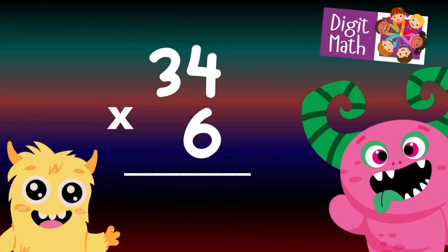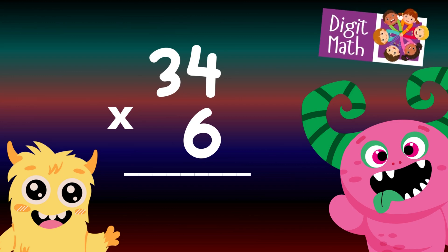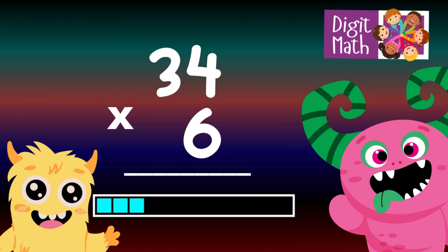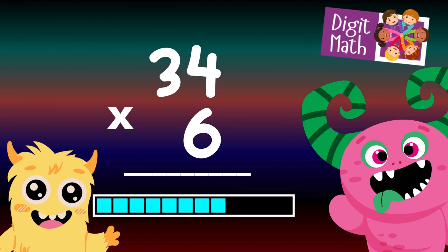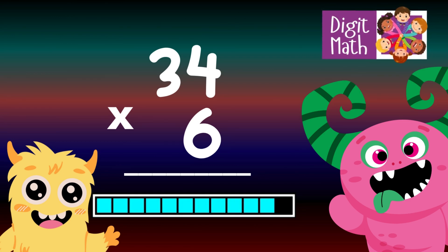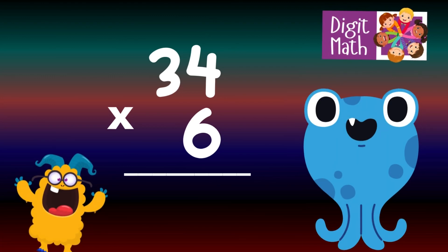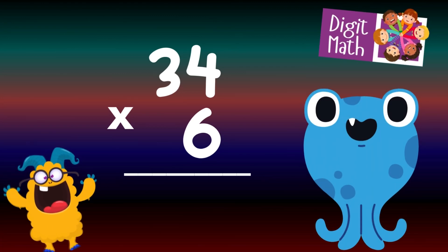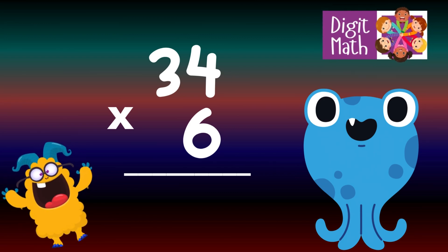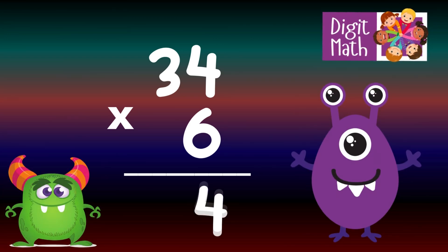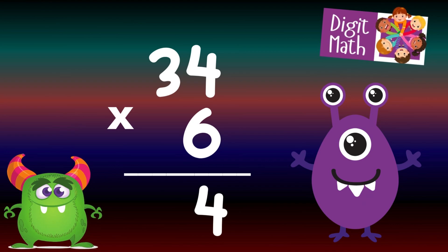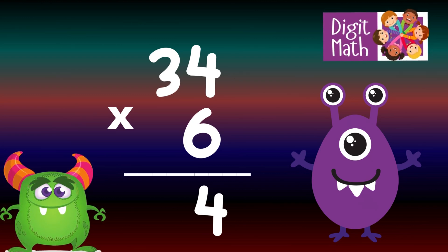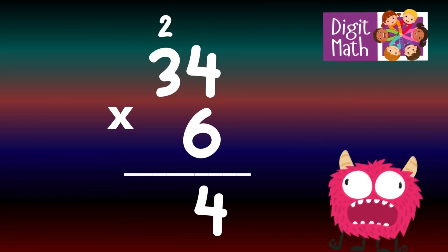34 times 6 — time to think. Let's go to the answer. To solve, multiply 34 by 6. In the Units column, multiply 6 by 4, which equals 24.